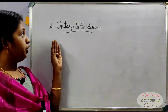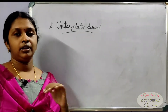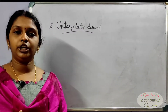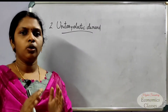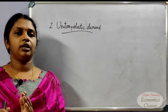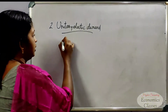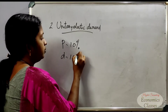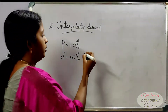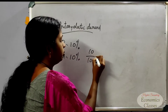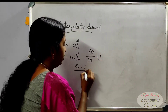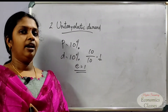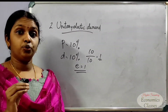The third type is unitary elastic demand. In this case, the percentage change in price and the percentage change in demand are equal. For example, if price changes by 10% and demand also changes by 10%, then elasticity equals 10 divided by 10, which equals 1. When E equals 1, it is called unitary elastic demand.